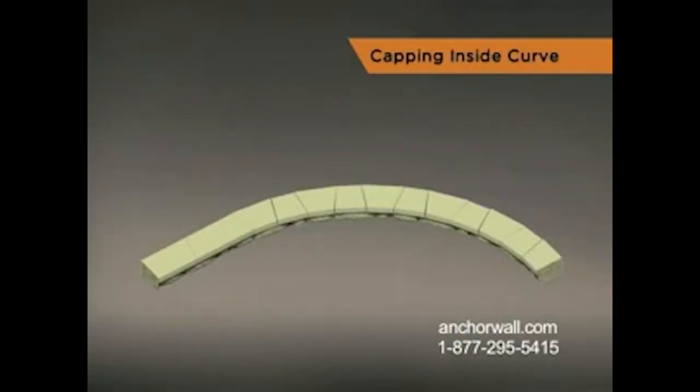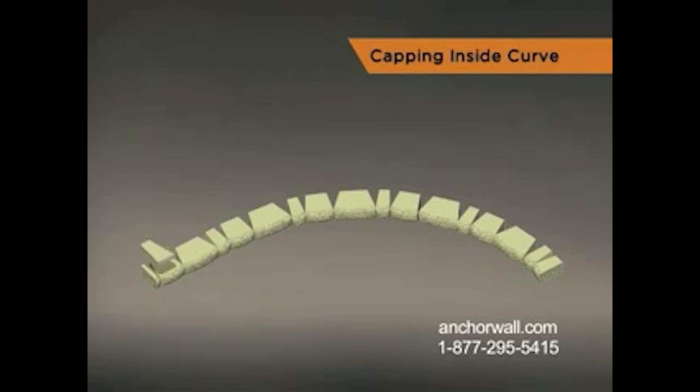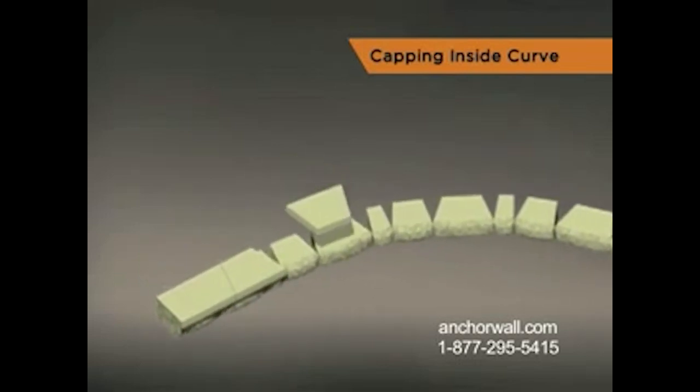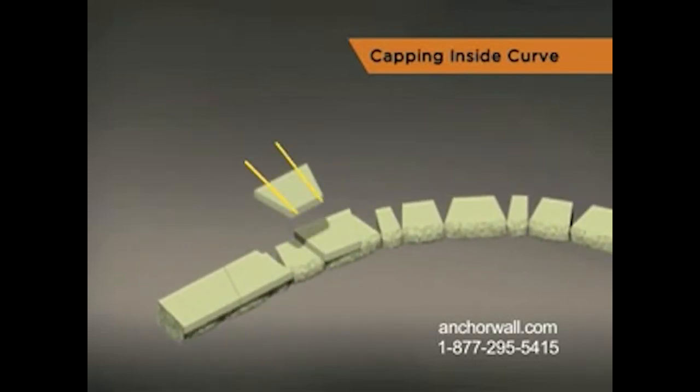The easiest way to cap an inside curve is to start by laying cap units side-by-side with the short side facing out and the proper reveal in front. In most cases you'll get the most pleasing result by making two cuts on one cap and then not cutting the cap on either side.